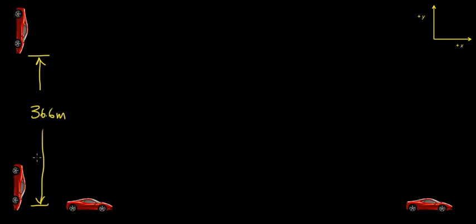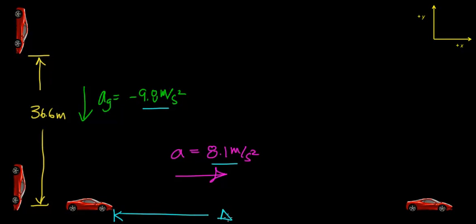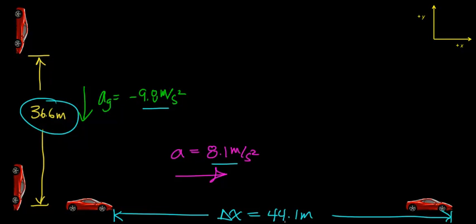When we dropped this car from rest, we only needed 36.6 meters for it to accelerate from rest to 26.8 meters per second, because the acceleration due to gravity is negative 9.8 meters per second squared. Whereas in the last video, the car could accelerate in the horizontal direction at only 8.8 meters per second squared. Because that acceleration is less, the velocity changes more slowly in the horizontal direction, so it required more distance — 44.1 meters — to reach a final velocity of 60 miles per hour, compared to only 36.6 meters while falling vertically. The difference in distance is determined by the difference in the rate of acceleration.